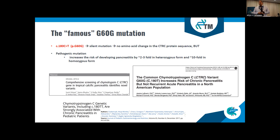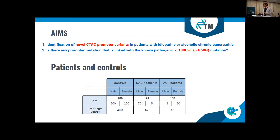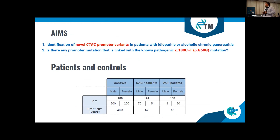The thing is, we don't know why it accumulates in patients. One explanation is that this mutation may not actually be the pathogenic mutation — it could be linked to another variant in the promoter region of CTRC. Therefore, we have two aims with this project: first, to identify novel variants in the CTRC promoter region; and second, to answer whether there is a link between the non-pathogenic G60G variant and one of the promoter variants in the CTRC gene.